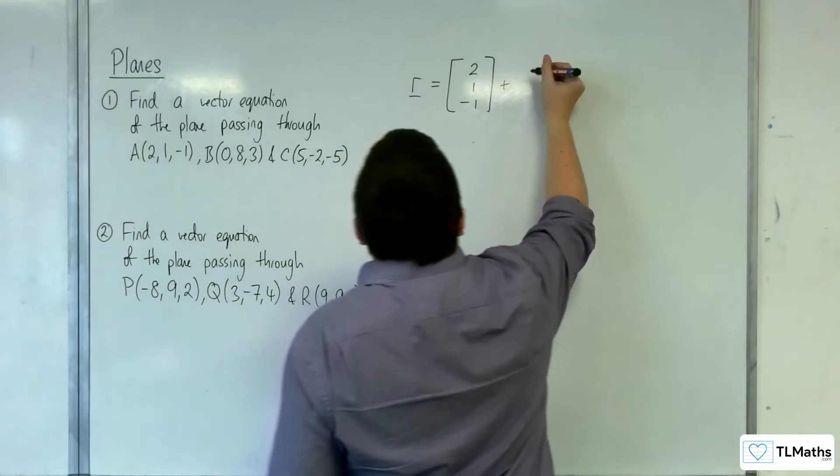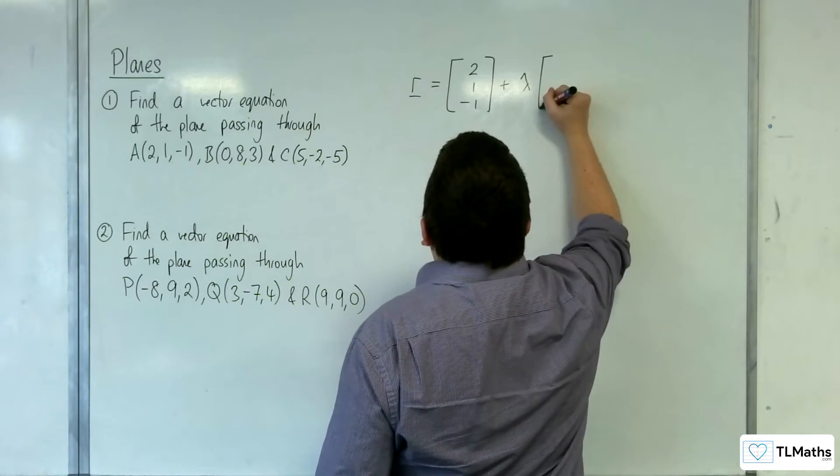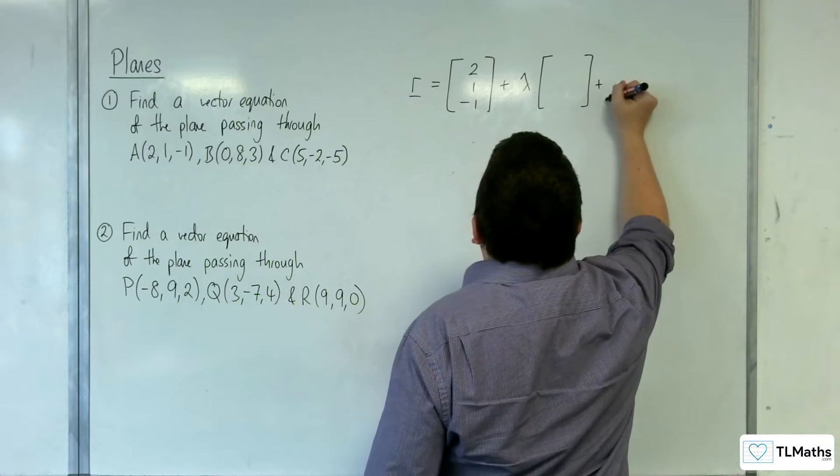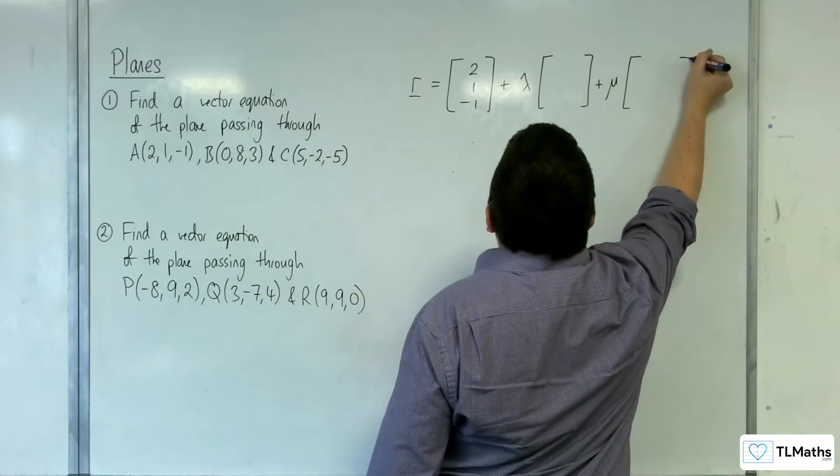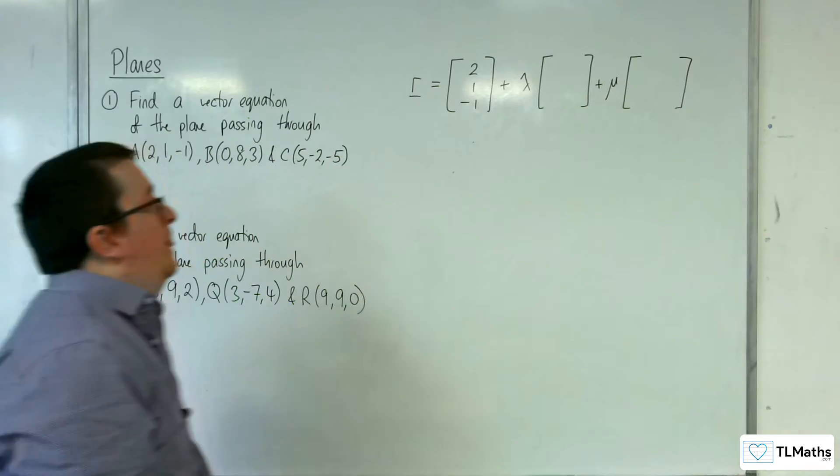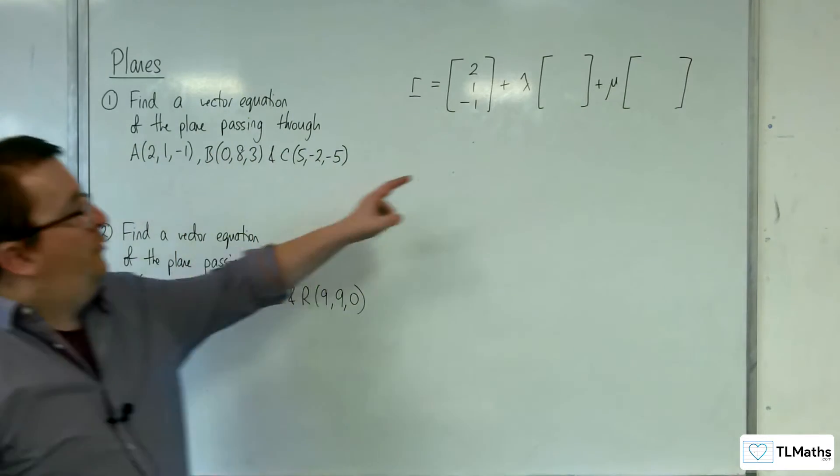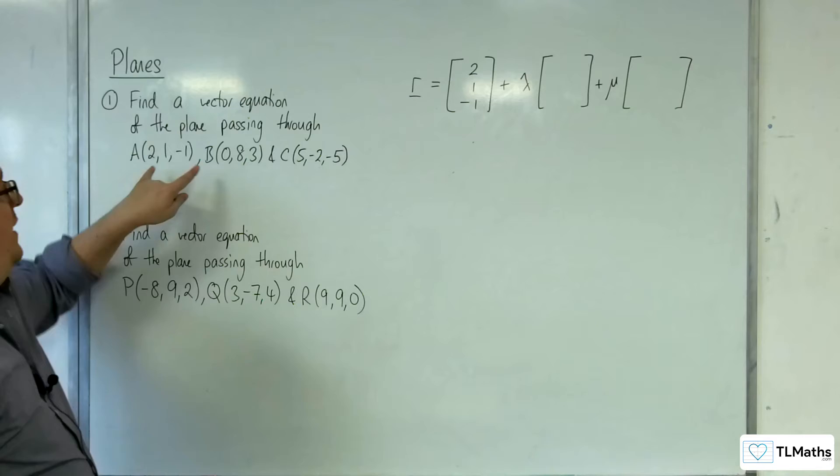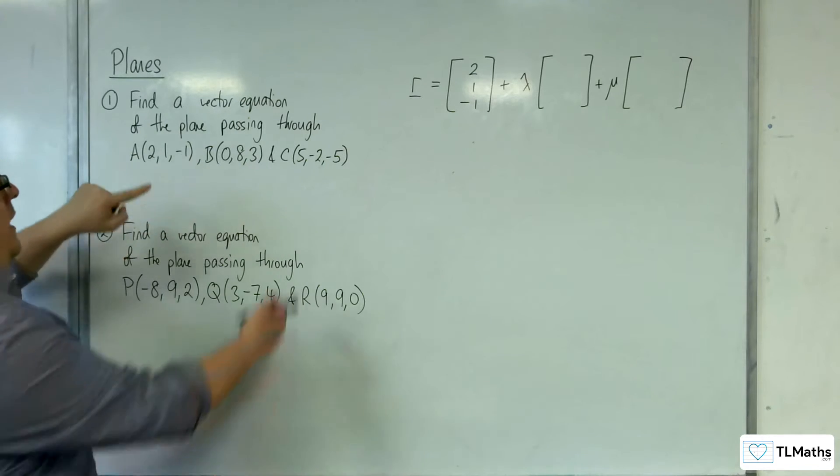Okay, I then want two non-parallel vectors, one that will multiply with lambda, one that will multiply with mu. So this first one here I could have as AB and the other one AC.